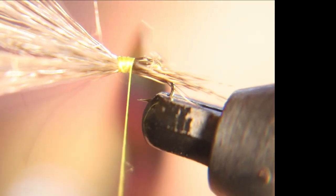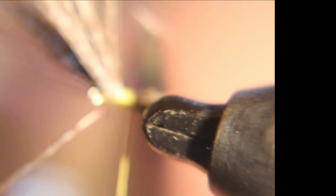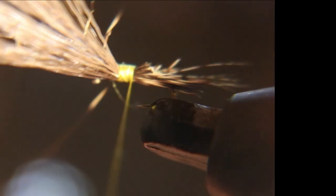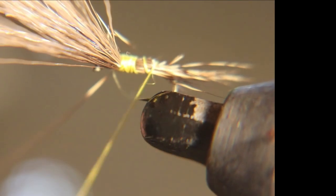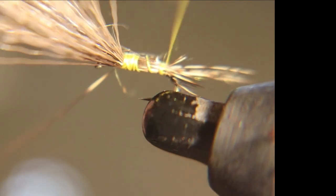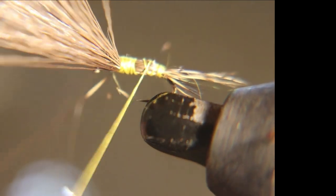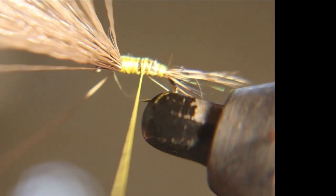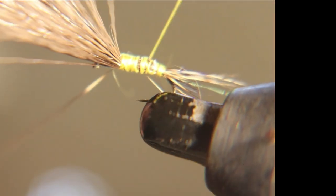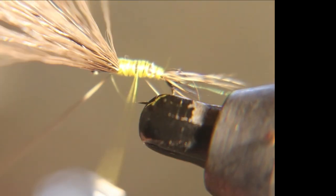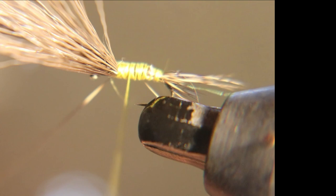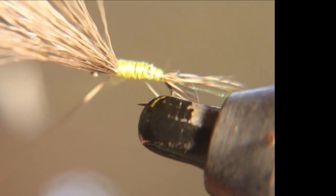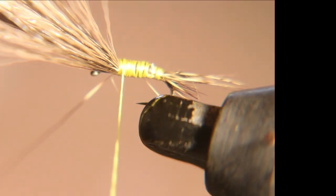Use enough thread wraps to cover up the deer hair, because your thread will become the body, so you want it the same color as you want the body. You can do these in different colors and different sizes.